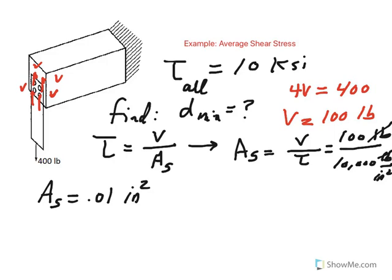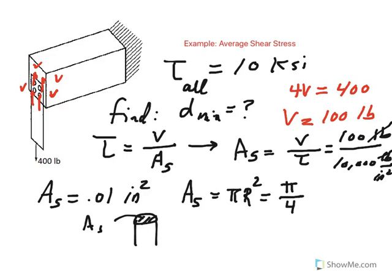And then since the area of a circle, we're talking about the cross-sectional area of the bolt, so this is the A sub s, right, is pi r squared or pi over 4 diameter squared if you want it in terms of diameter.